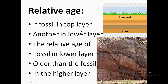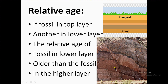Relative Age: if a fossil is present in the top layer, which is the youngest layer, the fossil also becomes the youngest. And if the fossil is present in a lower layer, it is 100% understood that it becomes the oldest one. You can see the layers present in the rock — their color changes from one layer to another as you move from up to down, and the change in color is easily identifiable.